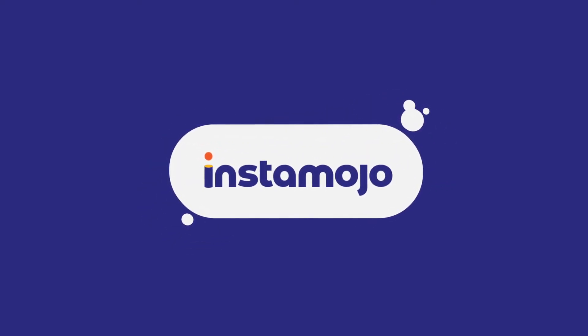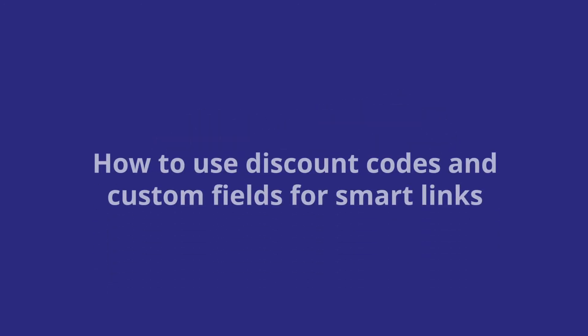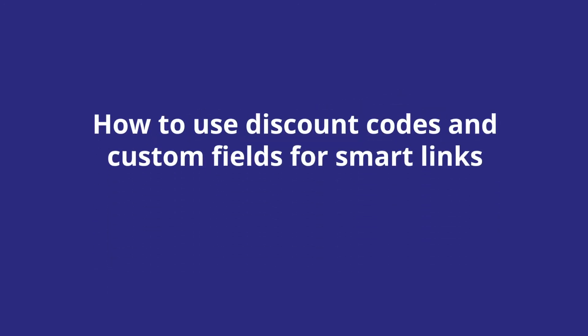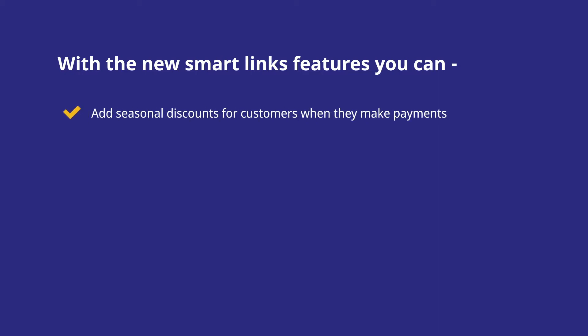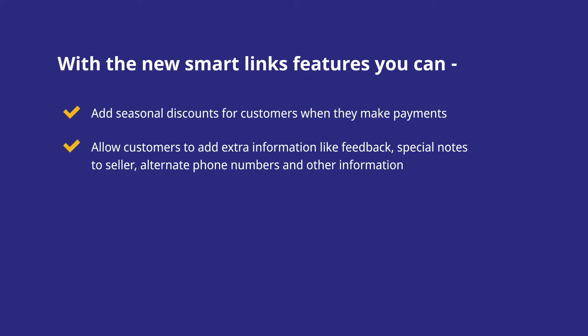Hello and welcome to Instamojo's Short Tutorials. Today, we will show you how to use discount codes and custom fields for your Instamojo's Smart Payment Links. With the new Smart Links features, you can add seasonal discounts for customers when they make payments and allow customers to add extra information like feedback, special notes to seller, alternate phone numbers and other information. If you haven't set up Smart Links for your payments yet, watch our tutorial on our YouTube channel. Let's see how you can use these new features with your Smart Links.